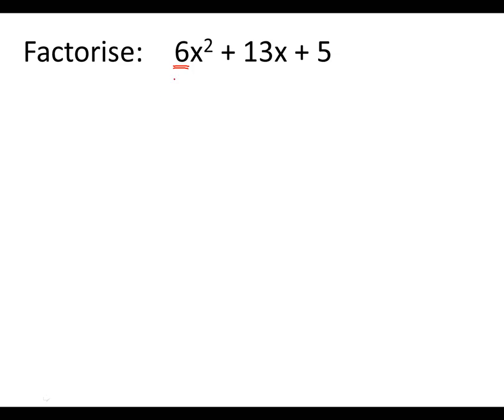So what we do is we take the first number, the 6, and we're going to multiply it by the last number, the 5. So 6 times 5 is 30.